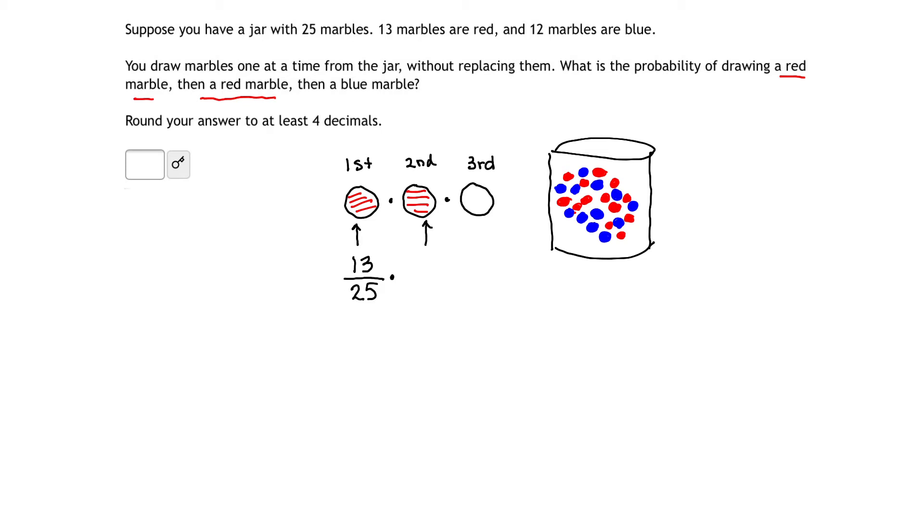that means when I go to calculate the probability of that second marble, I now have one less marble in my jar. In fact, I have one less red marble in the jar. So the probability of getting the second marble as red means the bottom has to be 24 because now there's 24 total marbles. And the number of reds left over in the jar is now 12. So the probability that that second marble is red is 12 over 24.